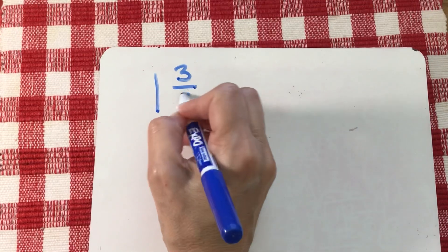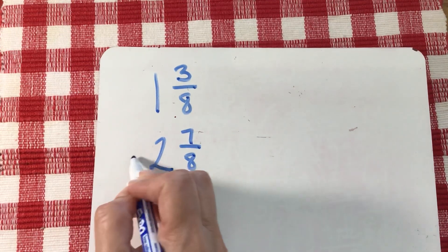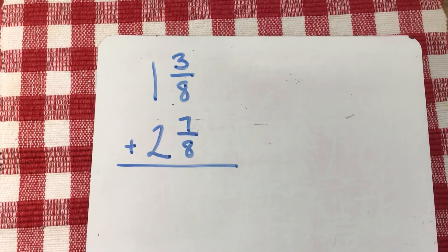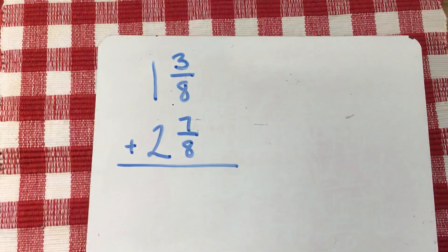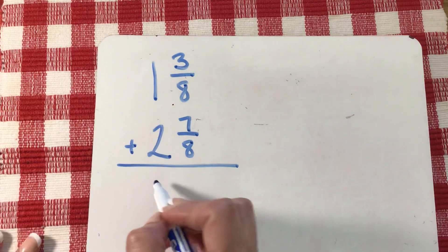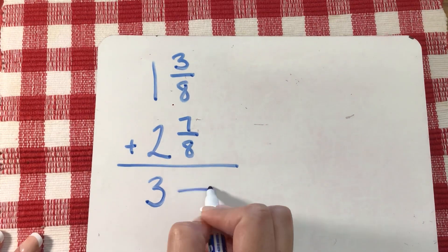Let's do the first method. If I have one and three eighths and I want to add to that two and seven eighths, remember your denominators are the same so you're not going to be needing to change anything with your denominators. I'm going to focus on my whole numbers first. One plus two is three. Now I'm going to focus just on my fractions. My denominator stays the same. I'm going to add my numerators. Three plus seven is ten.